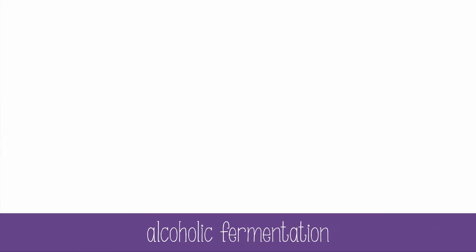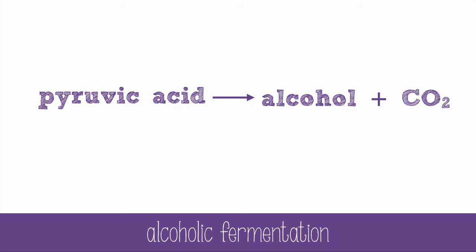Other organisms use a different pathway and create an alcohol and carbon dioxide instead of lactic acid from pyruvic acid. They still make NAD+ for glycolysis to use, but the pathway is a little different. Yeast will undergo alcoholic fermentation, and we use it to our advantage when making bread or beer. The alcohol and bubbles in beer are made by yeast through alcoholic fermentation. When bread dough is left to rise, the rising comes from the production of carbon dioxide bubbles in fermentation. The alcohol in the bread cooks off in the baking process.